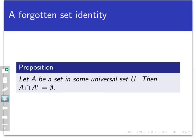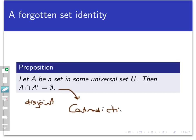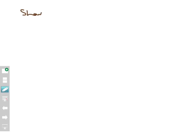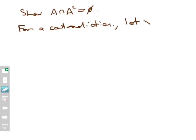Before we leave, I want to prove one extra identity that I feel ought to have been on the list but isn't. It's really simple, but we'll need it later. It says that if A is any set inside some universal set U, then A intersect its complement is empty — meaning A and its complement are disjoint. We've mentioned before that sets are often proven disjoint by contradiction, so let's try a proof by contradiction. Suppose for a contradiction that the intersection is not empty, and let X be an element of A intersect A complement.